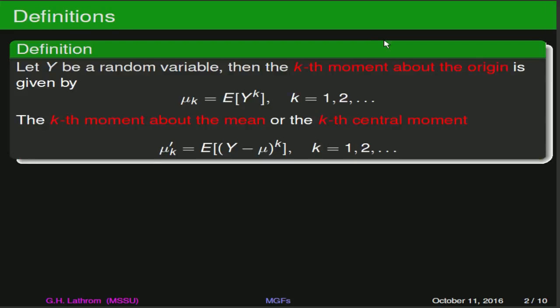Let's begin with some definitions that shouldn't seem too terribly foreign to us. If we have a random variable y, then the k-th moment about the origin is given by the expected value of y to the k-th power. This will be defined for k being any positive integer.